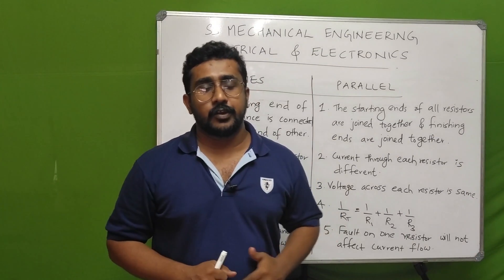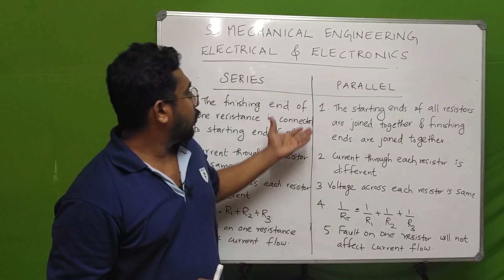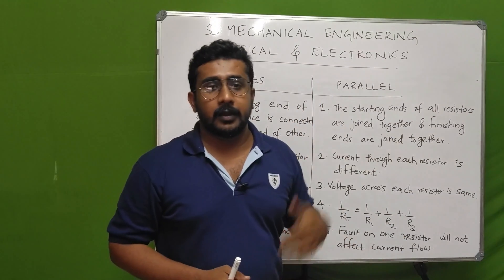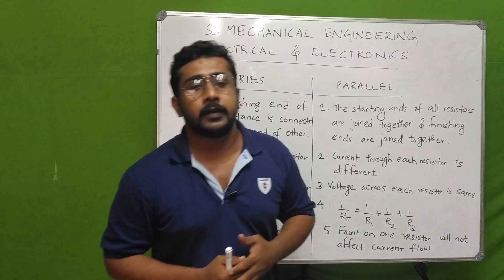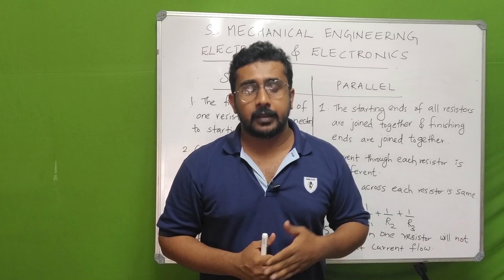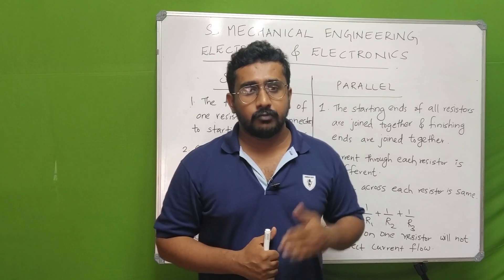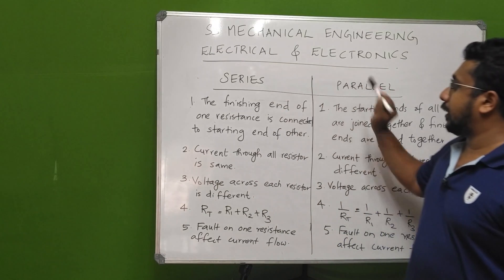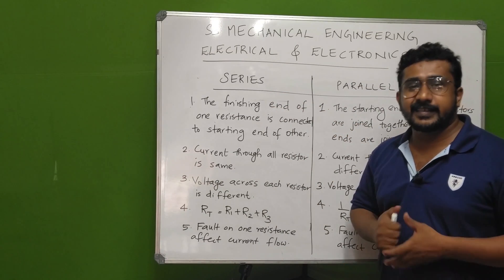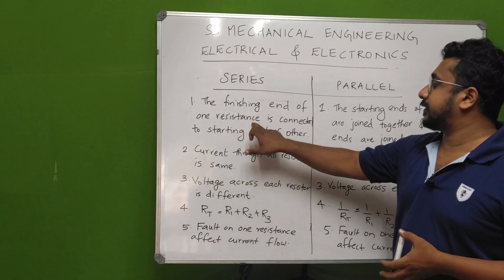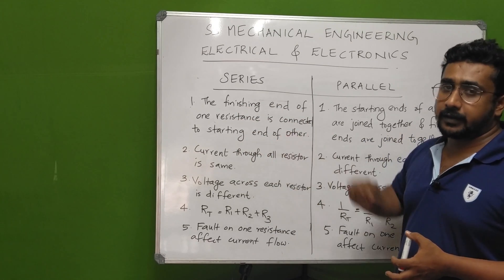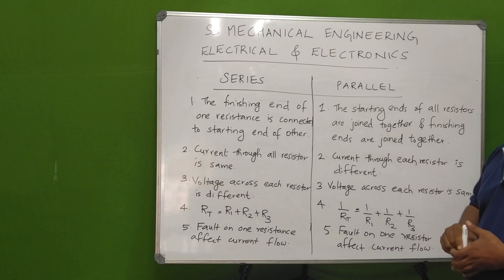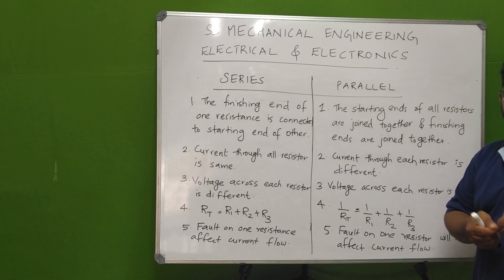Now we have both series and parallel connection. The characteristics of a series connection: the finishing end of one resistance is connected to the starting end of the other resistance. For a parallel connection: the starting ends of all resistances are joined together and the finishing ends are also joined together.